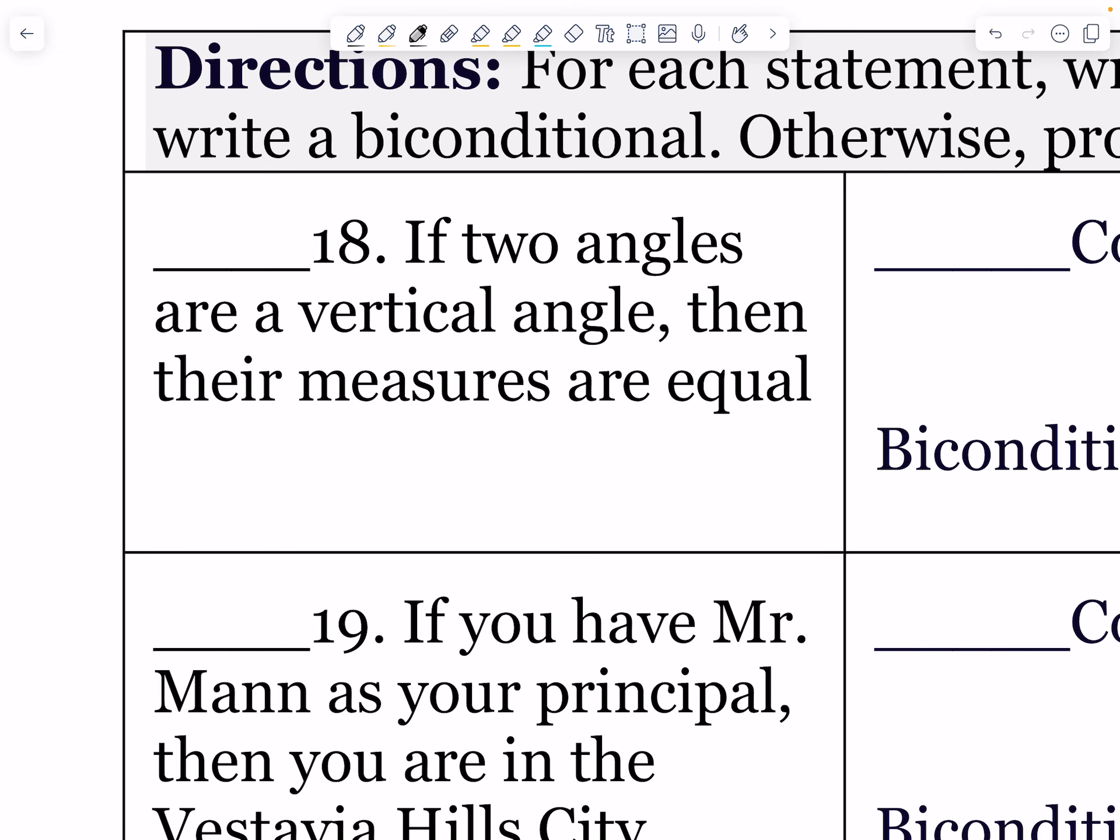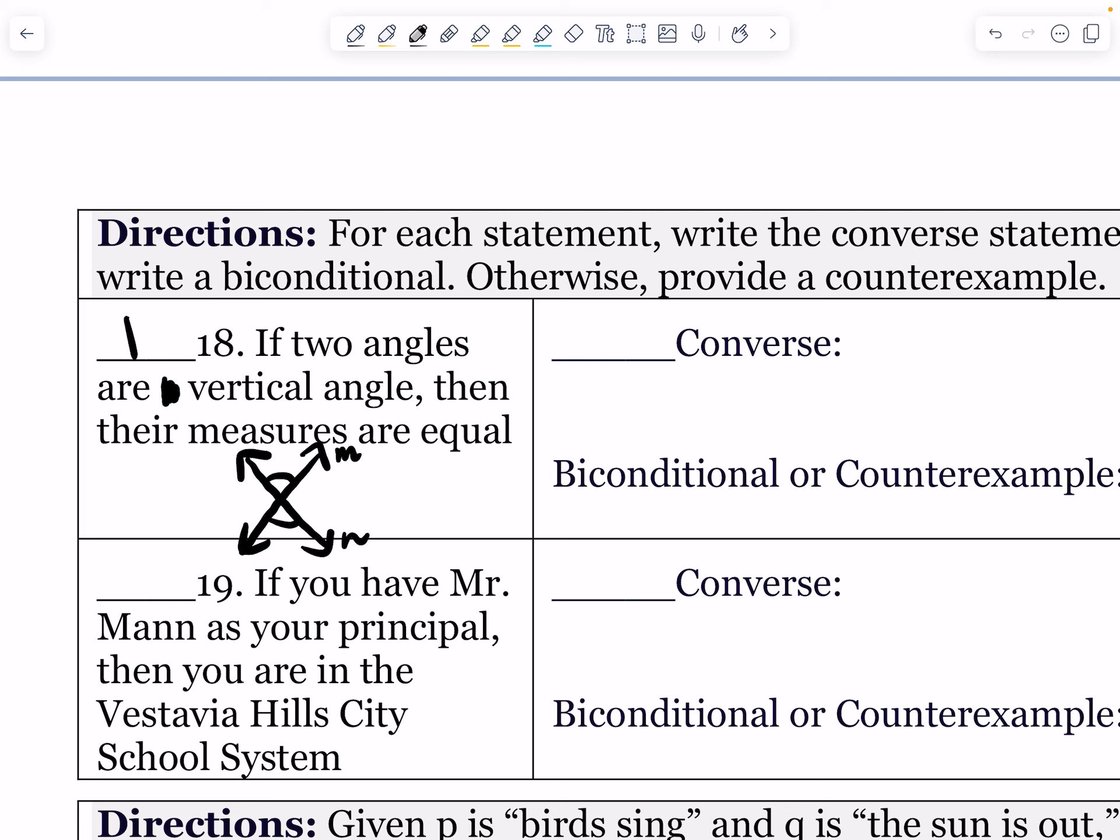Problem 18: If two angles are vertical angles, then their measures are equal. Let's draw that out. If in doubt, always draw it out. We have two lines crossing each other, lines M and N maybe. That creates vertical angles. The vertical angles theorem says that vertical angles are always equal in measure to each other, and so that is going to be true.